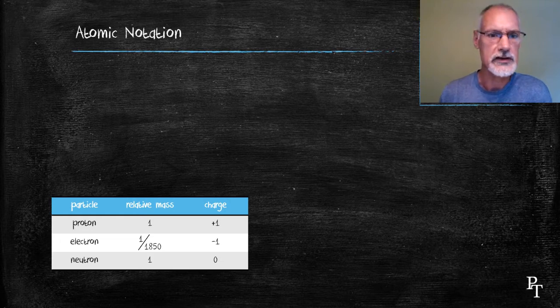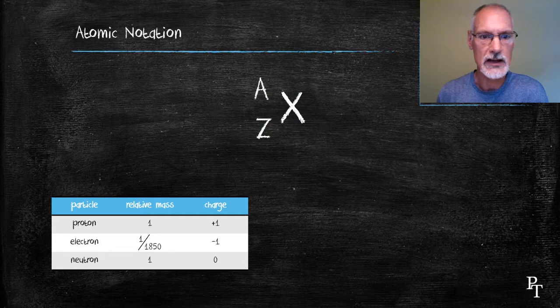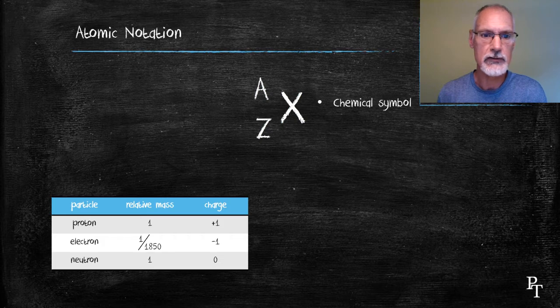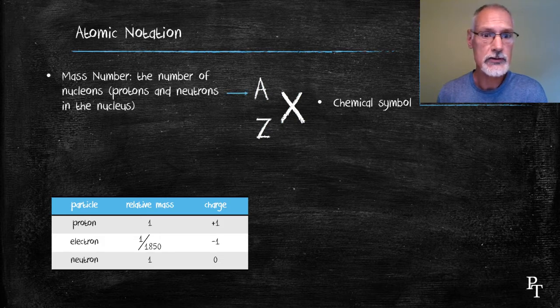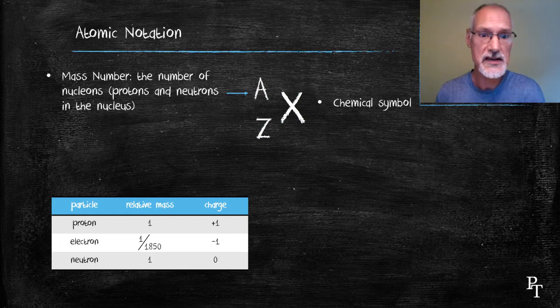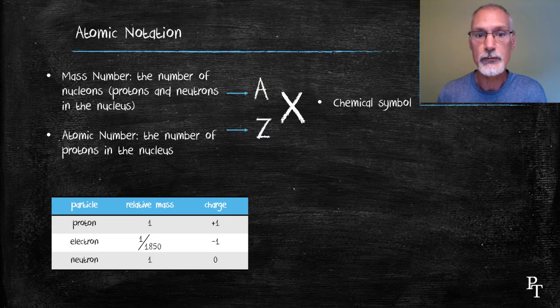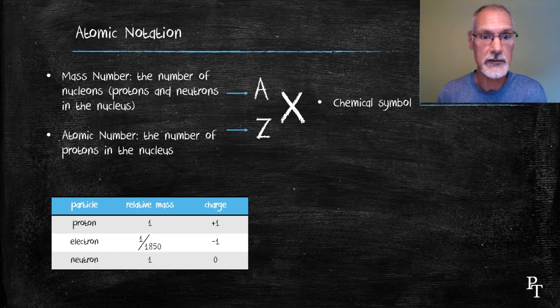I'd like to introduce now something called atomic notation. First of all, X represents the symbol of a chemical element, C for carbon, O for oxygen, Cu representing copper. The top number is sometimes called the mass number, and it represents the total number of particles that are in the nucleus. Remember that the neutrons and protons make up most of the mass of the atom, so you can think of that number as the total number of protons and neutrons put together. The lower number, Z here, represents what we call the atomic number, which is the number of protons in the element. The number of protons identifies what the element is.